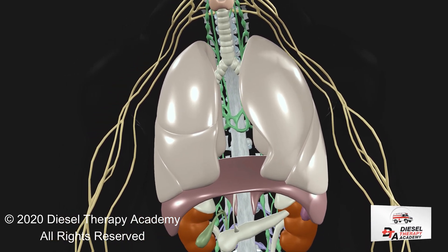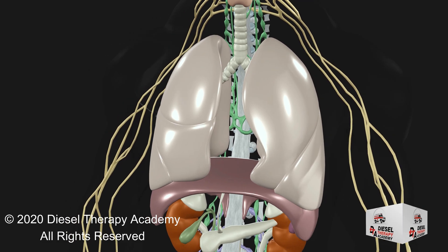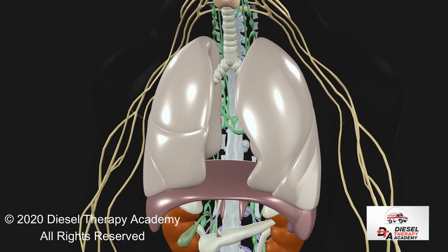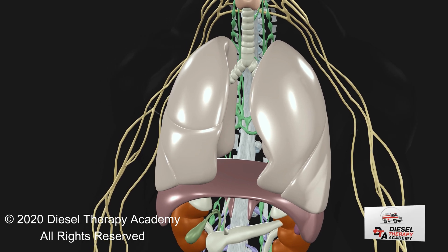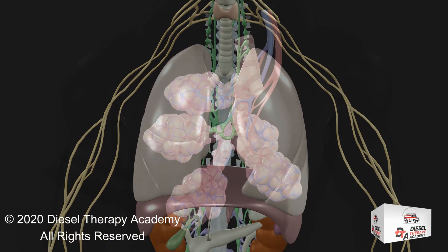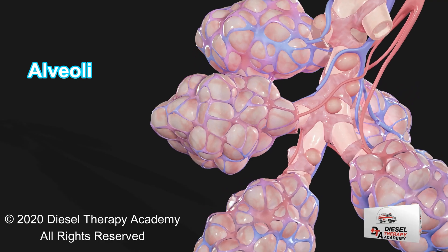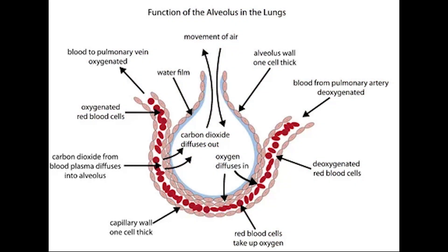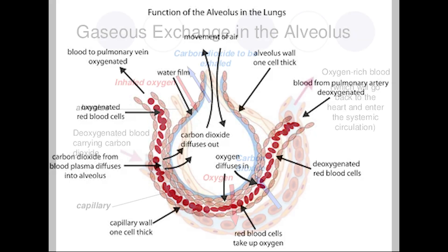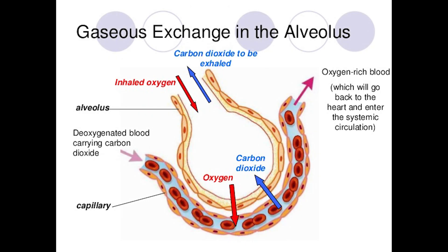The mucous membrane also undergoes a transition from ciliated pseudostratified columnar epithelium to simple cuboidal epithelium to simple squamous epithelium. The alveolar ducts and alveoli consist primarily of simple squamous epithelium, which permits rapid diffusion of oxygen and carbon dioxide. Exchange of gases between the air in the lungs and the blood in the capillaries occurs across the walls of the alveolar ducts and alveoli.